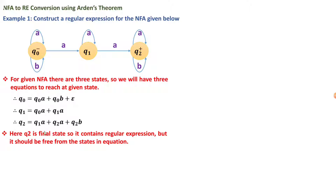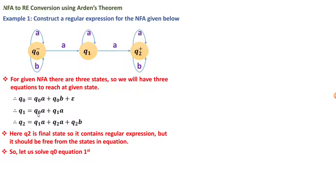To find the regular expression, we note that q2 depends on q1 and q2, and q1 depends on q0 and q1, while q0 depends only on itself. So the solving order is: solve q0 first (no other state dependency), substitute into q1 to solve q1, then substitute q1 into q2 to get the final regular expression.